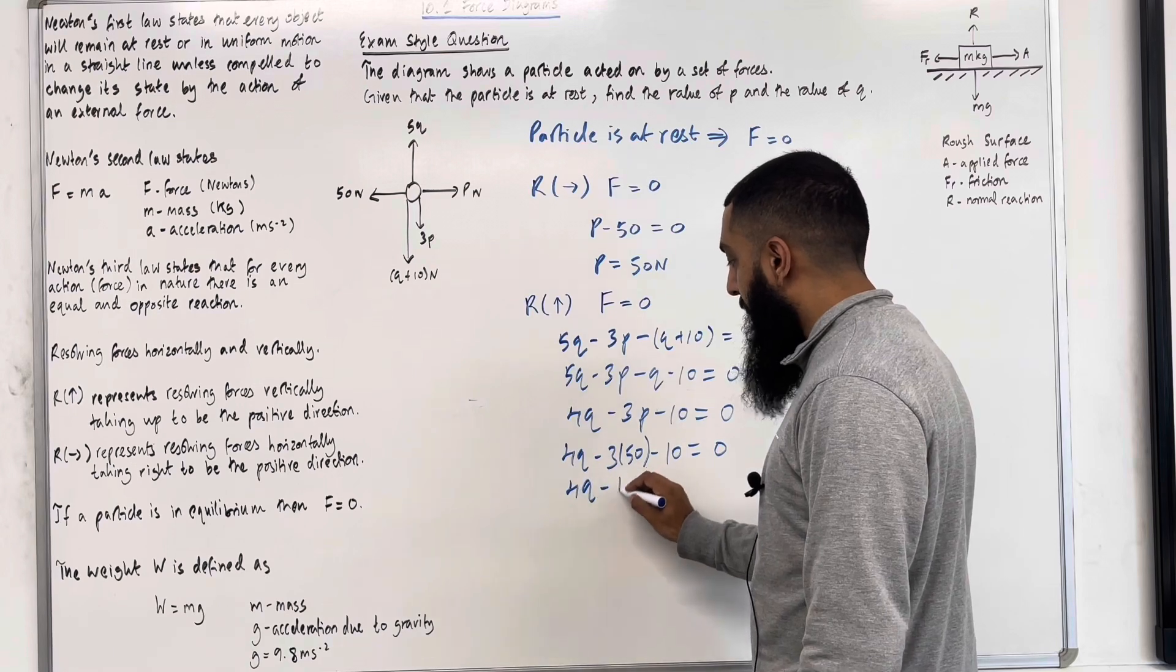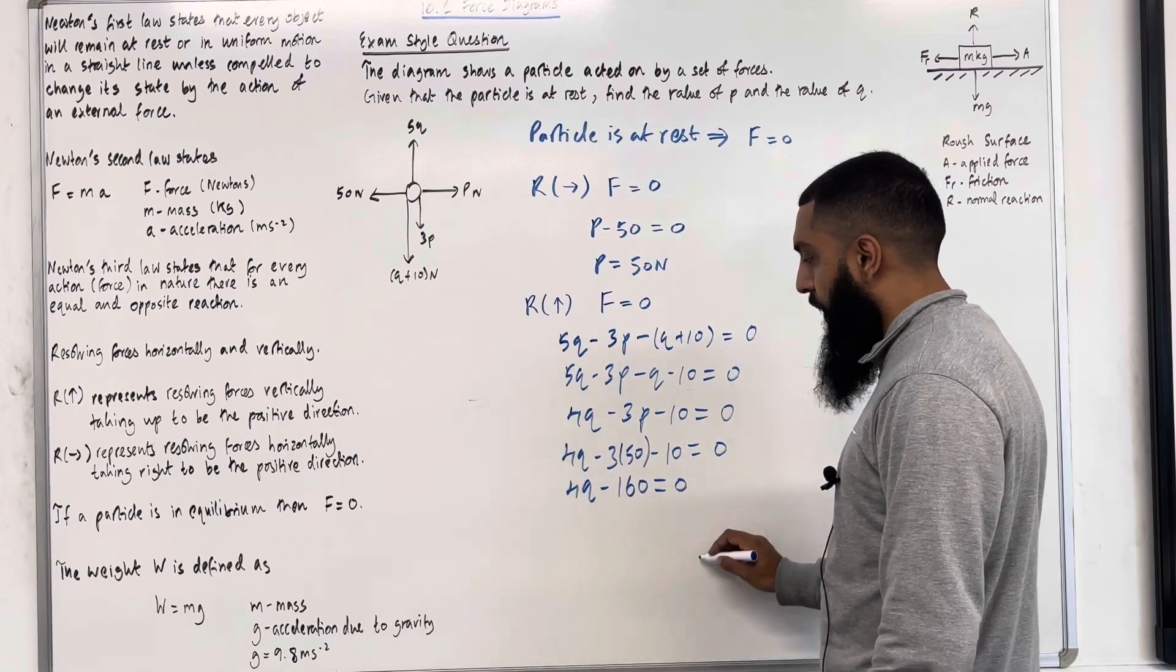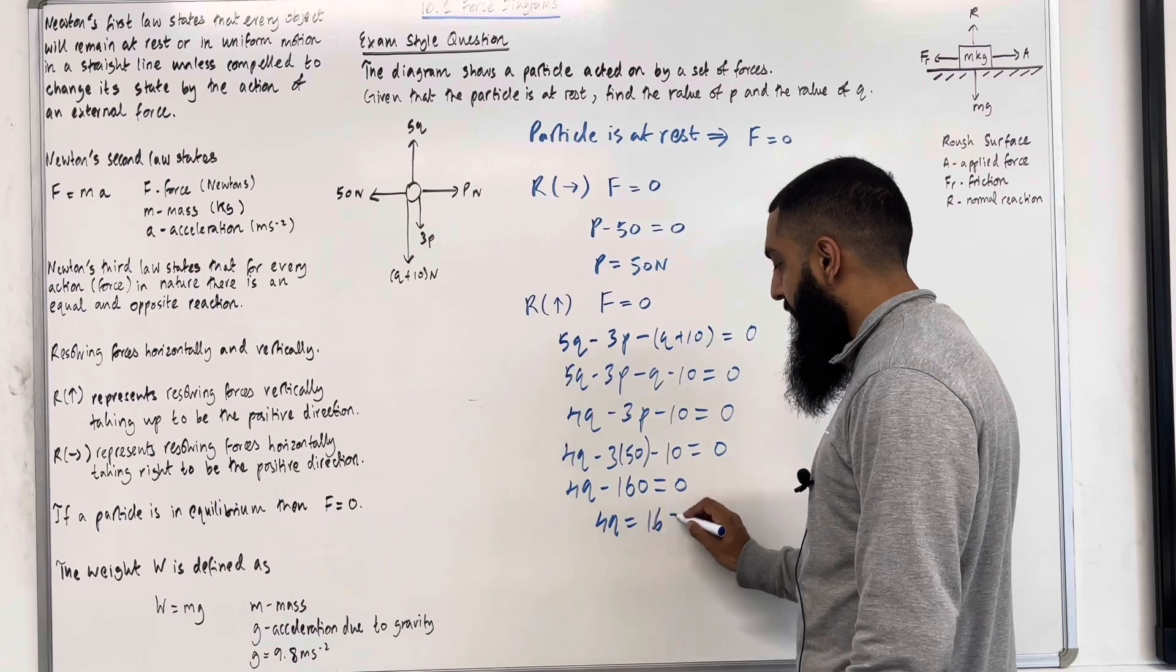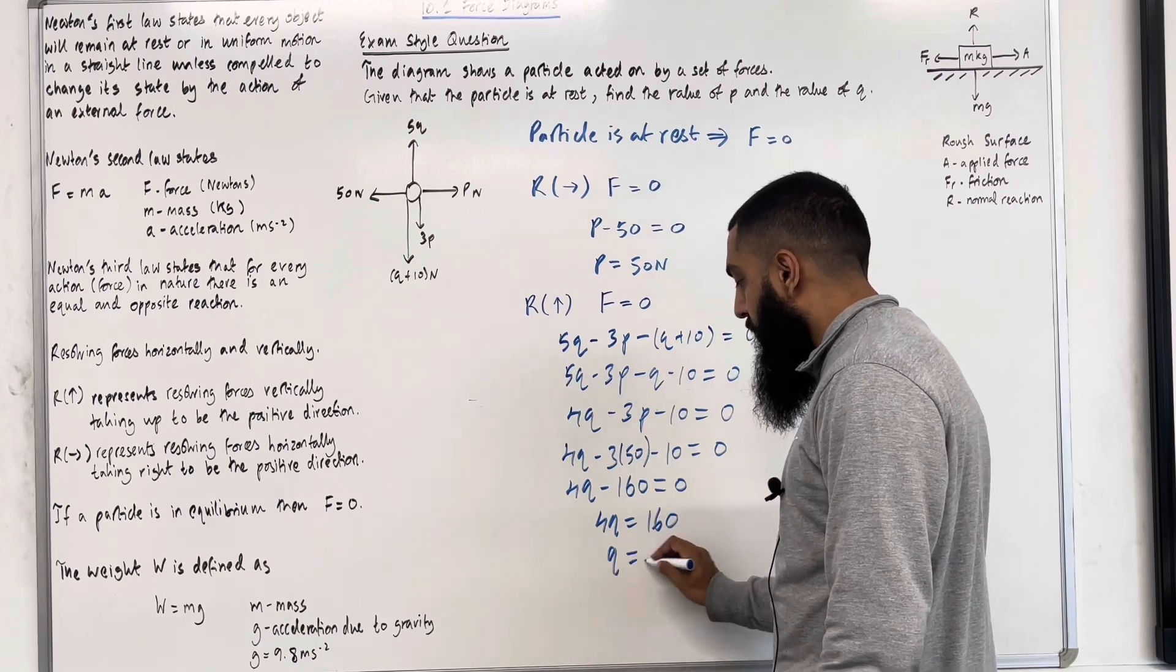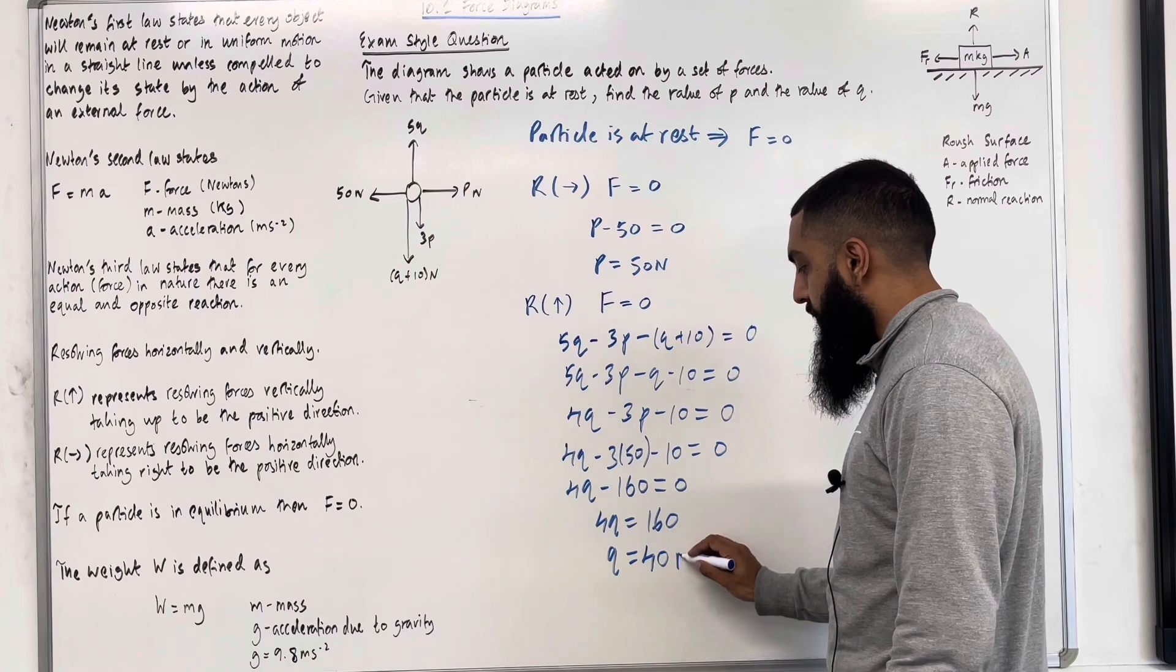So 4Q minus 160 equals zero. 4Q equals 160. So Q equals 160 divided by 4, which is 40 newtons.